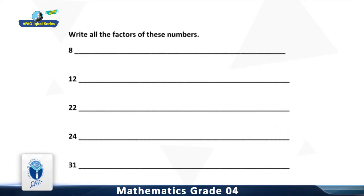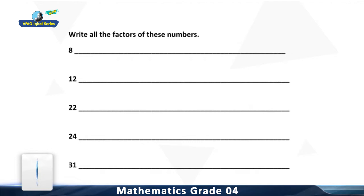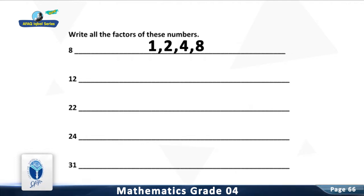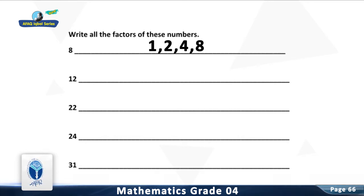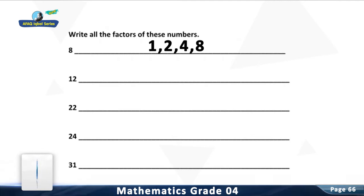Write all the factors of these numbers. Question 1: Write all the factors of 8. You are right. The factors of 8 are 1, 2, 4, and 8.